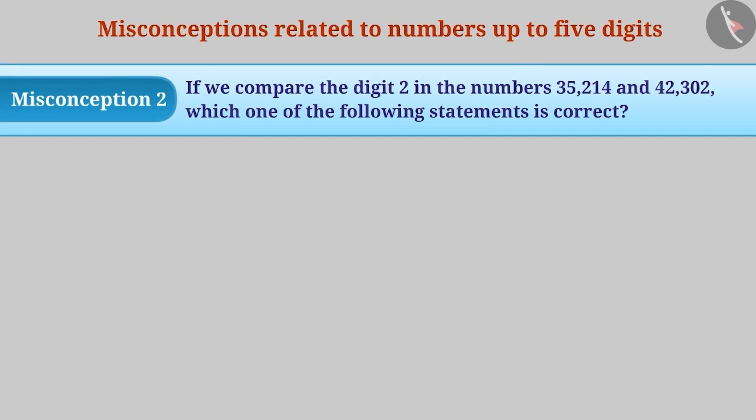Misconception 2: If we compare the digit 2 in the numbers 35,214 and 42,302, which one of the following statements is correct?